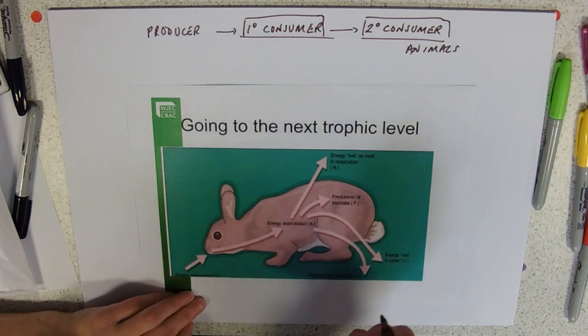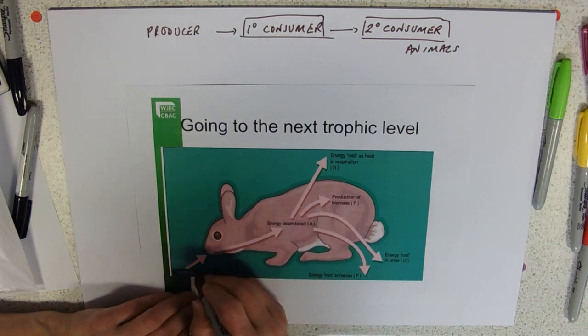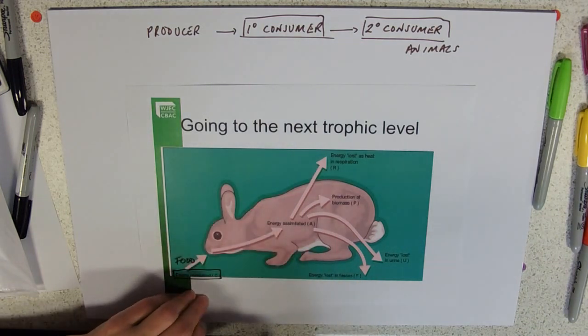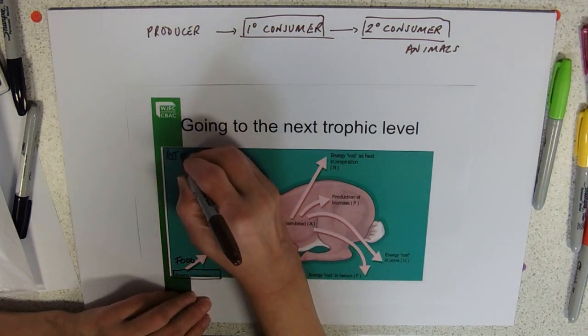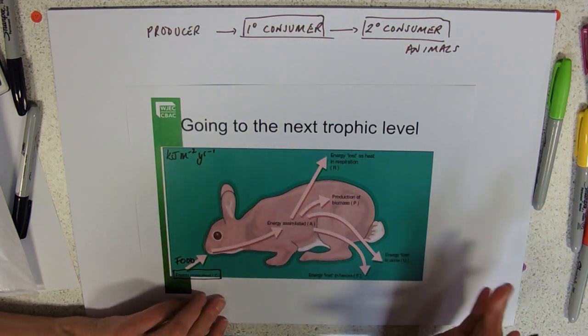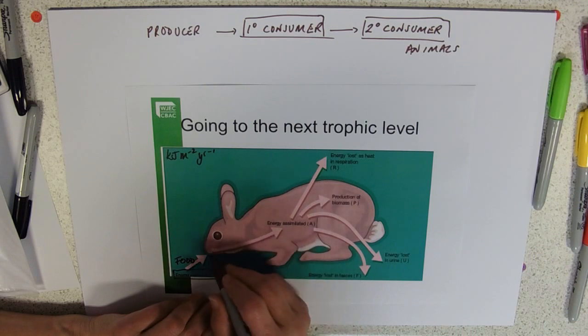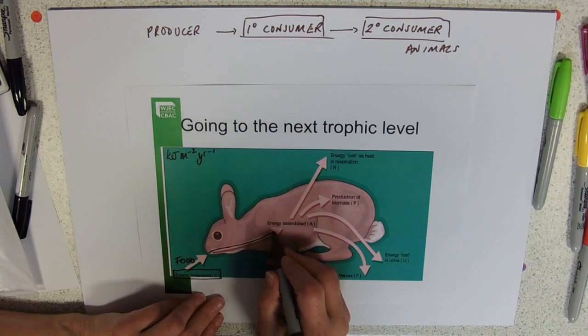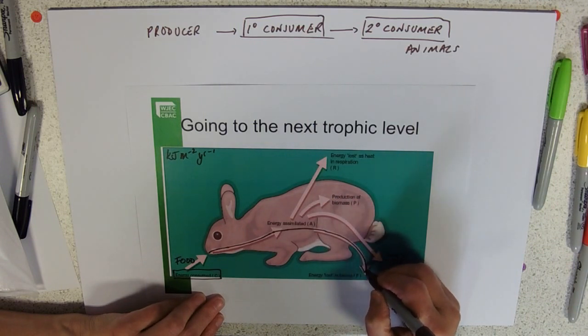The animal at whatever trophic level it's at is consuming energy. This is the food that it's eating which has an energy level, usually we're looking at kilojoules per meter squared per year as production. You do it for a year because it takes into account any seasonal variation. When the animal takes in food, it goes into the gut, gets digested, and some of it does not get digested and drops straight out as faeces, which we'll label F.